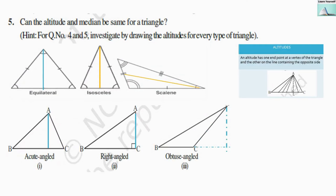Question number five: can the altitude and median be the same for a triangle? We check each case: equilateral, isosceles, scalene, acute angle, right angle, and obtuse angle triangles. For the equilateral triangle, yes — altitude and median will be the same because all sides are equal. So for the equilateral triangle only, the altitude and median will be the same.